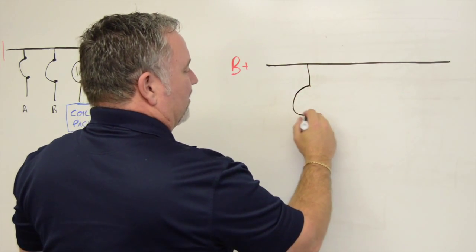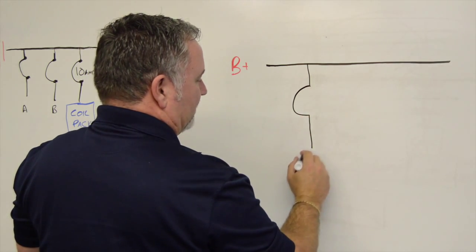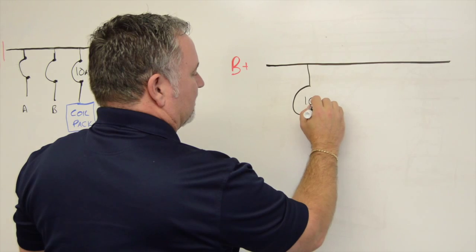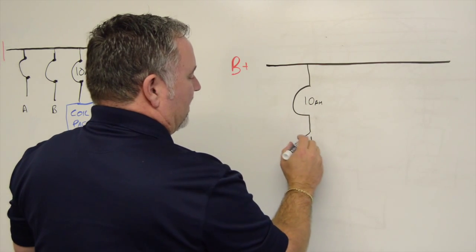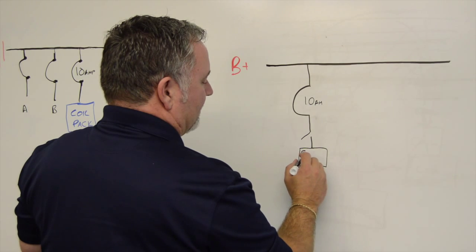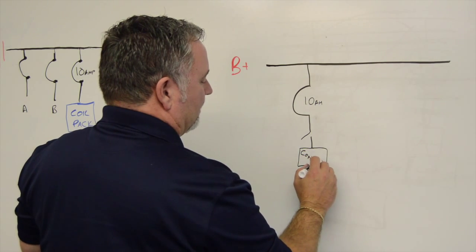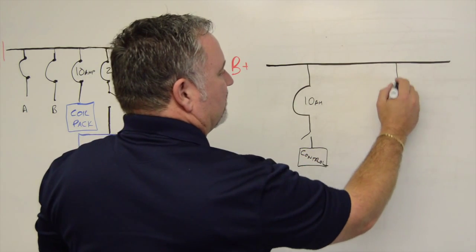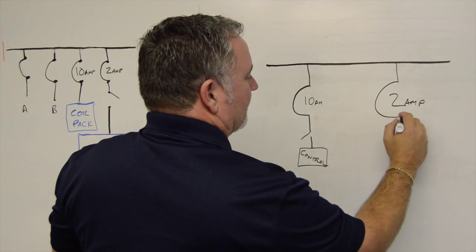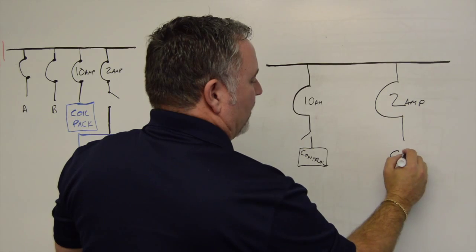Once we got into the wiring of the airplane a little bit, this is what we found. We found on the 10-amp circuit, they had wired the controller, and then on the 2-amp circuit, they had wired the coil pack.